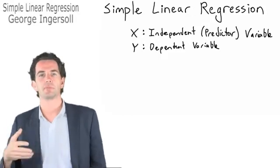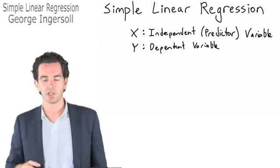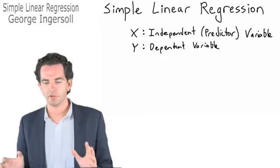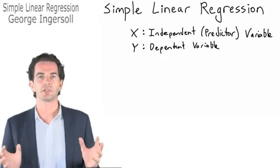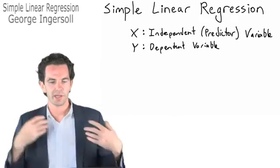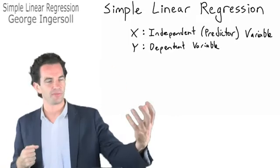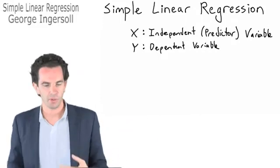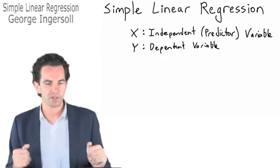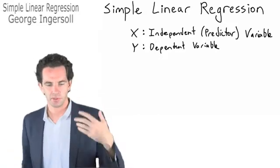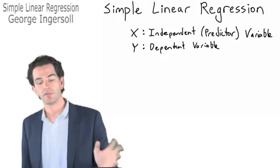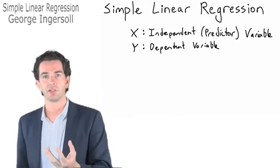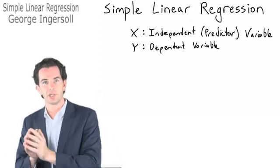We call x our independent or predictor variable because that's what we plug into the function and it gives us a value for y. In simple linear regression, these relationships are basically interchangeable — you can reverse the equation to get x from y. But these terms are useful to start using now because when we get into multiple regression, we'll have several independent predictor variables and still just one dependent variable, using those predictors to come up with one prediction for y.